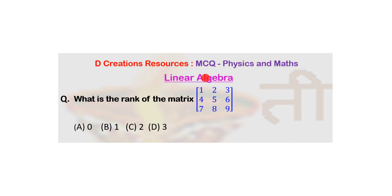A matrix has been given to you, a 3x3 matrix, and you've been asked to find out its rank. And there are 4 options: 0, 1, 2, and 3.